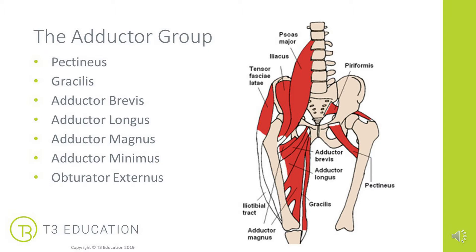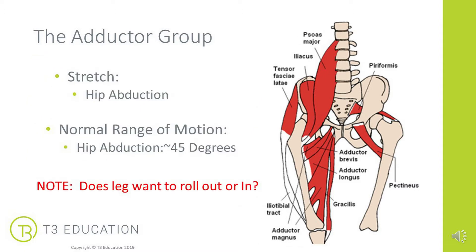When doing range of motion testing, observe whether the leg is rolling in or out. To stretch this group, we bring the hip into abduction — taking the leg away from the body. Normal range is about 45 degrees. Note during both active and passive ROM testing whether the leg rotates in or out, and consider: if we correct to neutral, will that put the leg on more stretch or target different muscles?